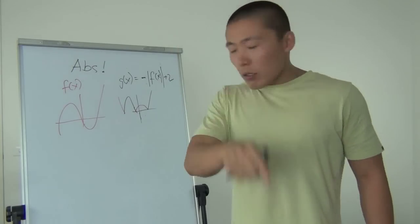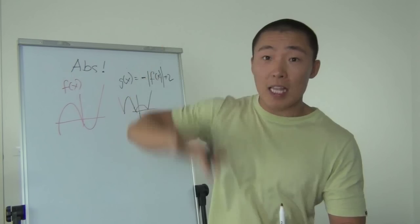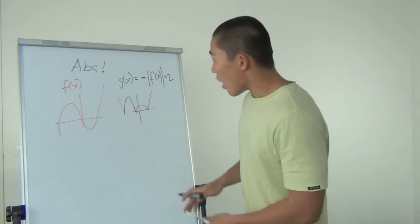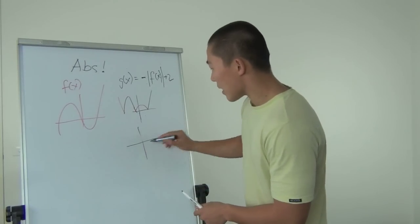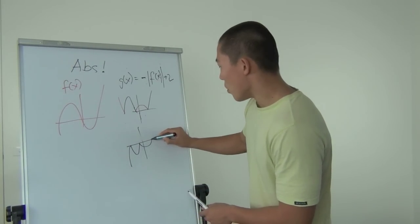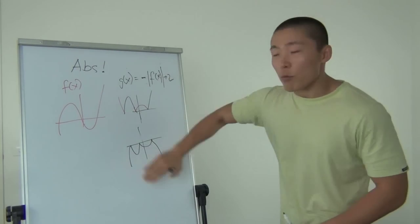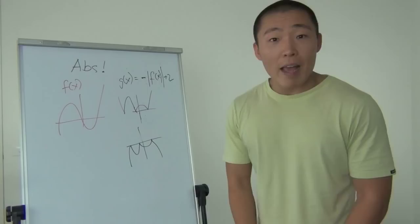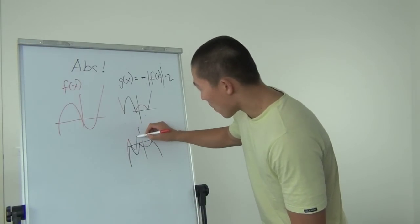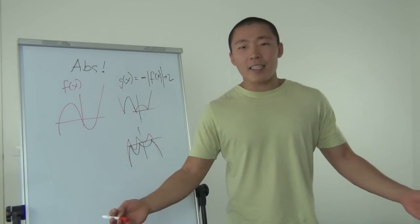That negative, what does that do? Negative. Okay. Now everything is reflected. It's outside, up and down. Everything is now reflected. So now it doesn't look like this. It looks something more like this. Boom, boom, boom, boom, boom. Bad drawing, but you get the point. Everything's reflected. And now plus two, guess what? Everything goes up two. So now the whole graph looks like this. Boom, boom, boom, boom, boom. That's it. That is it.